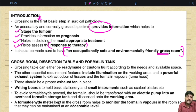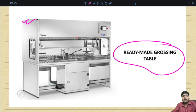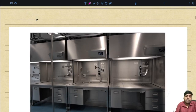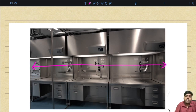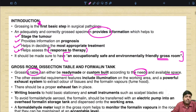The grossing table can either be ready-made or custom-built according to the needs and available space. A ready-made grossing table might be very big for a particular available space in a hospital, so it might not suit you. In institutes with a very high load, a single grossing station might not suffice to meet day-to-day demands, so you may need a custom-made grossing table to accommodate more individuals.